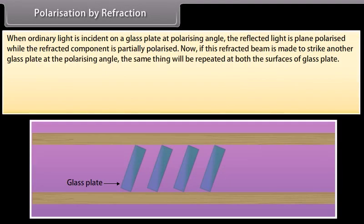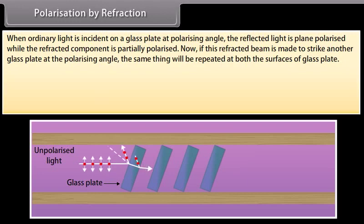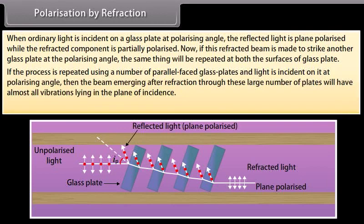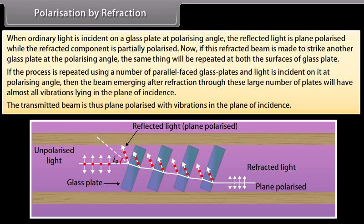Polarization by refraction: when ordinary light is incident on a glass plate at the polarizing angle, the reflected light is plane polarized while the refracted component is partially polarized. If this refracted beam is made to strike another glass plate at the polarizing angle, the same thing is repeated at both surfaces. If the process is repeated using a number of parallel-placed glass plates with light incident at the polarizing angle, then the beam emerging after refraction through these plates will have almost all vibrations lying in the plane of incidence. The transmitted beam is thus plane polarized with vibrations in the plane of incidence.